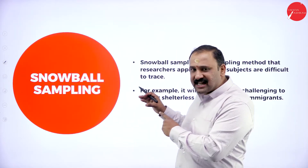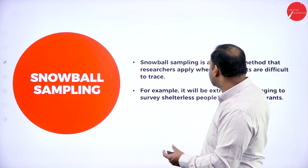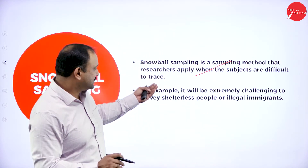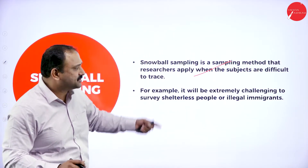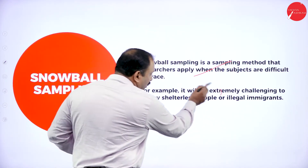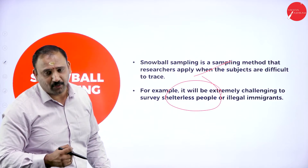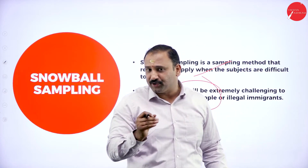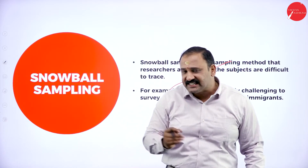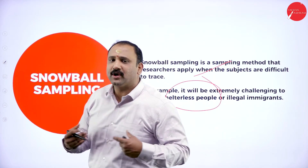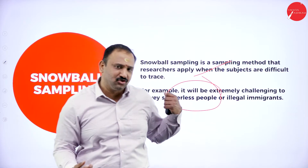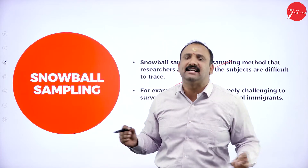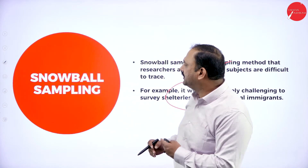Snowball sampling is a method researchers apply when subjects are difficult to trace. For example, it is extremely challenging to survey shelterless people or illegal immigrants. When the subject of research makes it very difficult to identify the sample size or subject population, you proceed on a random snowballing basis and try to address the subject as randomly and generally as possible. That's where the snowball technique comes into picture.